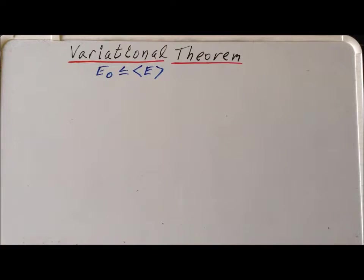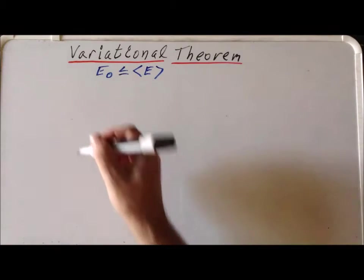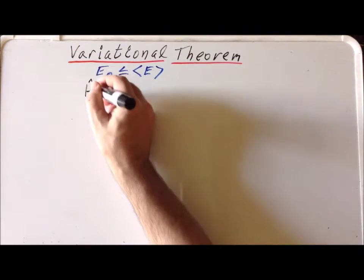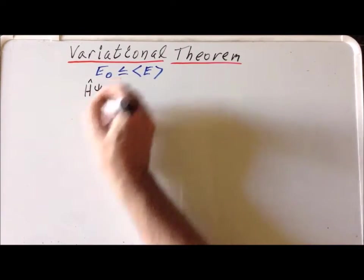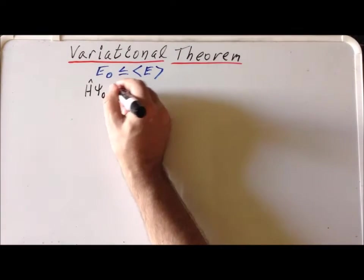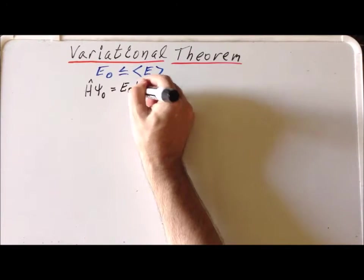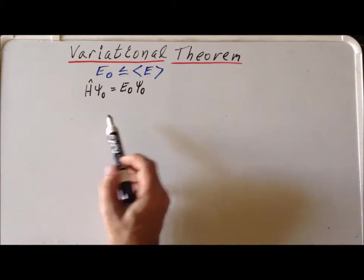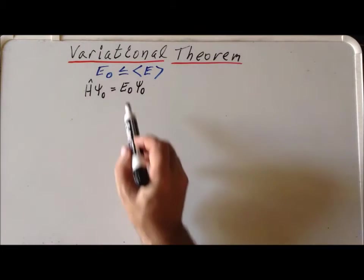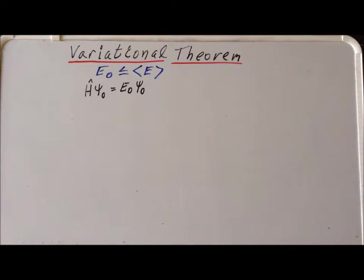Let's start off with some basics. Let's assume that we're talking about the Hamiltonian operator and it operates on an eigenfunction psi sub zero with an eigenvalue E sub zero. This is simply telling us that psi 0 is an eigenfunction with an eigenvalue E sub 0, and we're also insisting that E sub 0 is actually the true ground state of the system.